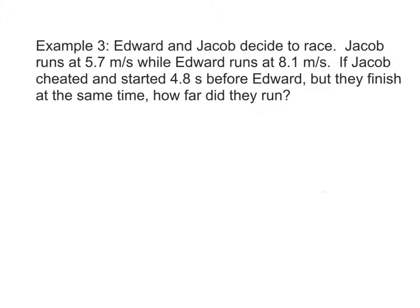Okay, here is a third example with problem solving where you're going to have to make substitutions. It tells us Edward and Jacob decide to race. Jacob runs at 5.7 meters per second, while Edward runs at 8.1 meters per second. If Jacob cheated and started 4.8 seconds before Edward, but they finish at the same time, how far did they run?